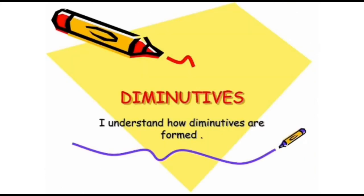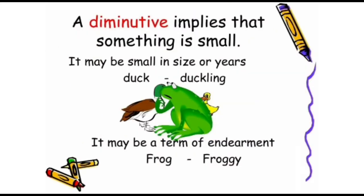Diminutives. I can understand how diminutives are formed. In grammar, diminutive pertains to a productive form denoting smallness, familiarity, or affection — for example, the suffix -let in droplet, from the word drop.